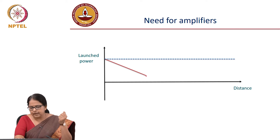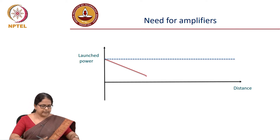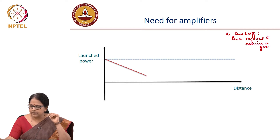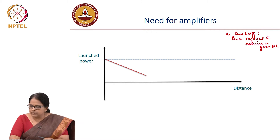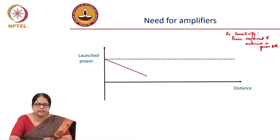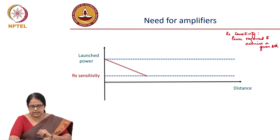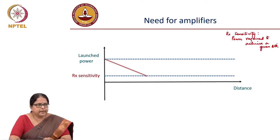That minimum point is decided by the receiver sensitivity, which we discussed yesterday. Receiver sensitivity is the power required to achieve a given BER, and that BER is typically 10 to the power minus 9. Receiver sensitivity is not the minimum power that the receiver can detect; it is the minimum power required to achieve a certain BER. The lower bound for the y-axis is the receiver sensitivity, and you cannot allow the power to drop below it, which limits the distance you can transmit over a single link without any repeater.